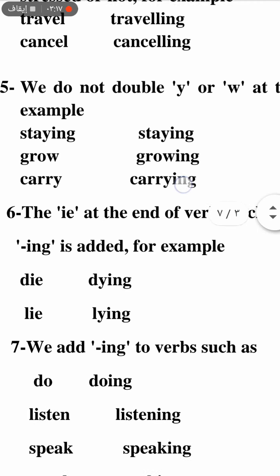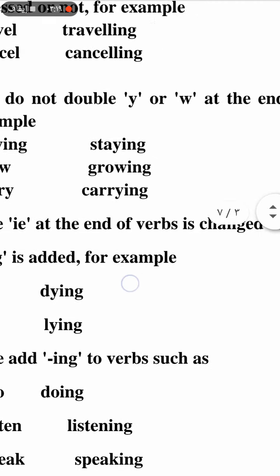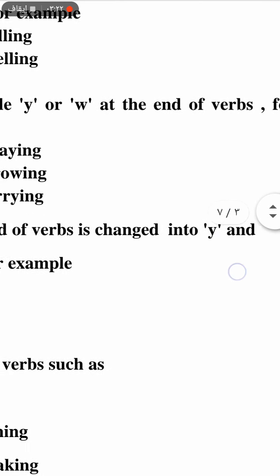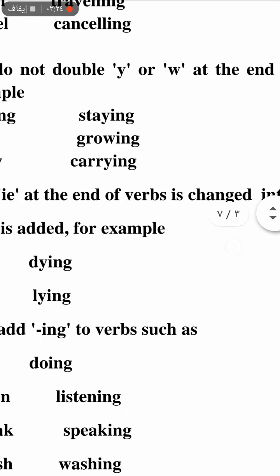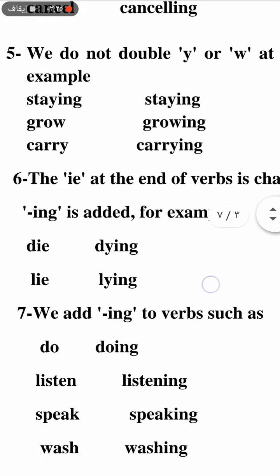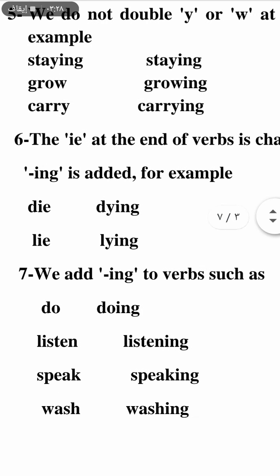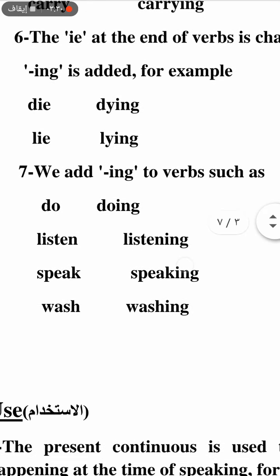If the verb ends in I-E, we change the IE to Y before adding -ing. For example: die → dying, lie → lying.